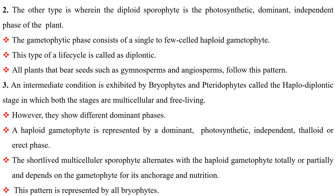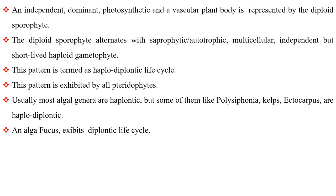An intermediate condition is exhibited by bryophytes and pteridophytes called the haplodiplontic stage, in which both stages are multicellular and free-living. However, they show different dominant phases. A haploid gametophyte is represented by a dominant photosynthetic independent thaloid or erect phase. The short-lived multicellular sporophyte alternates with the haploid gametophyte, totally or partially, and depends on the gametophyte for its anchorage and nutrition. This pattern is represented by all bryophytes.